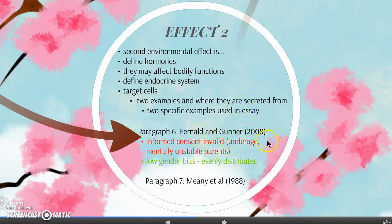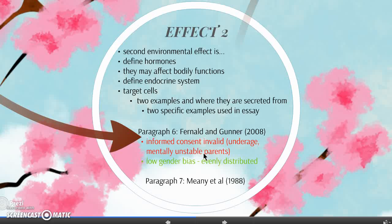I've covered Fernod and Gunner previously, so I won't repeat it, but I didn't do the evaluation. The evaluation is that informed consent for Fernod and Gunner is actually invalid, due to the fact that the participants were children. While it's acceptable to have participants under 18 if a parent or caregiver signs consent, the mothers were depressed and not psychologically stable, making the informed consent invalid. However, there was low gender bias, as genders were evenly distributed — approximately 324 boys and 315 girls — which eliminates gender bias.